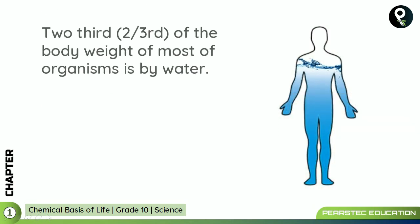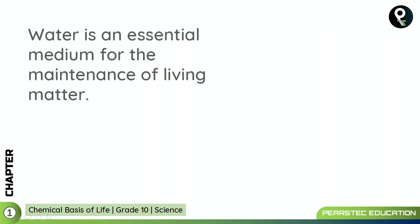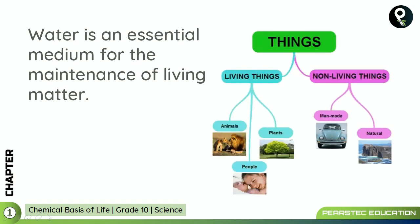Two-thirds of the body weight of most organisms is water. If you are weighing around 90 kilograms, then 60 kilograms is going to be water in your body — quite an interesting one. Water is an essential medium for the maintenance of living matter. As you know from Grade 6, there are living things and non-living things. For living things such as animals, plants, and people, water is essential for the maintenance of living matter — whether in plants, animals like lions, or human beings.